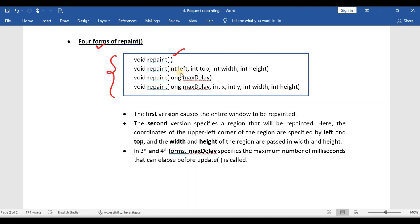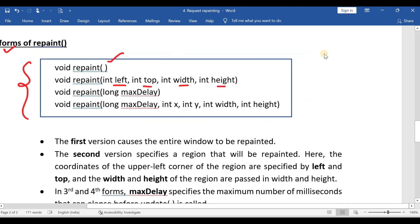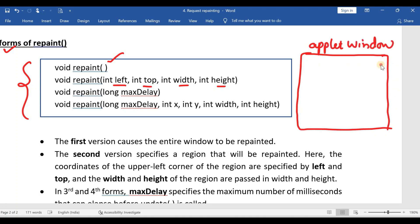And second one is repaint with four arguments: left, top, width and height. What is the meaning of this? Suppose this is your applet window. And now if data is already printed on this applet window, already displayed. Now I want to update only this portion. I want to update only this portion of the window.